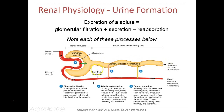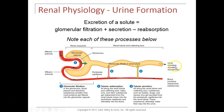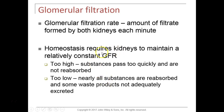Every time we filter, fluid comes out and goes into the tube, pushing the filtrate in front of it forward. If we're filtering too quickly, filtrate moves through too quickly and you lose needed substances in urine. If you filter too slowly, you have too much time to reabsorb substances back into the blood and you don't excrete waste products effectively. For that reason, GFR has to be regulated precisely.